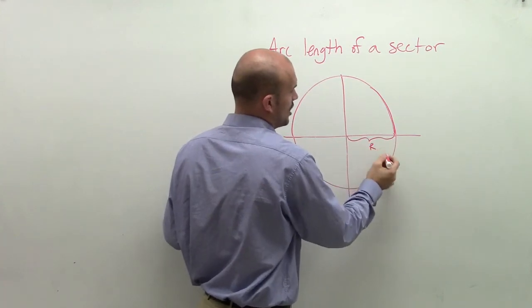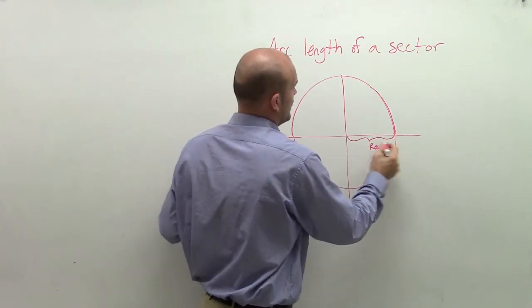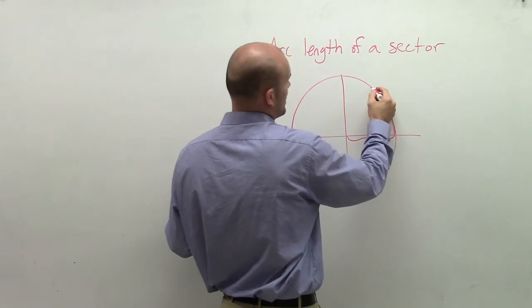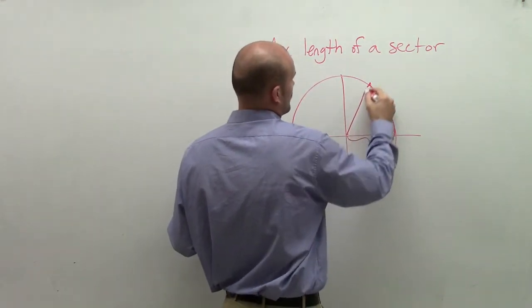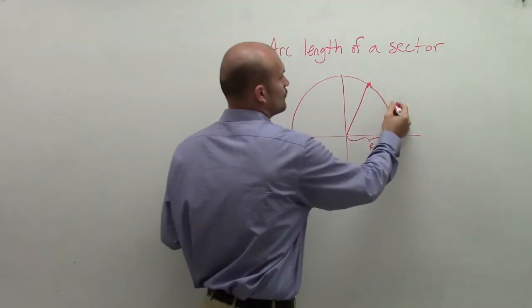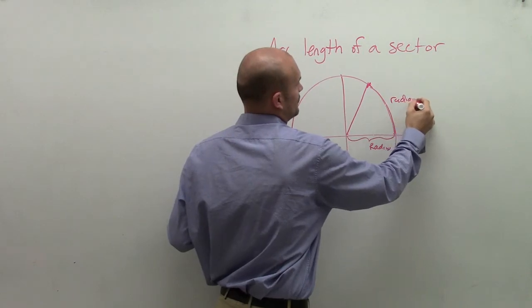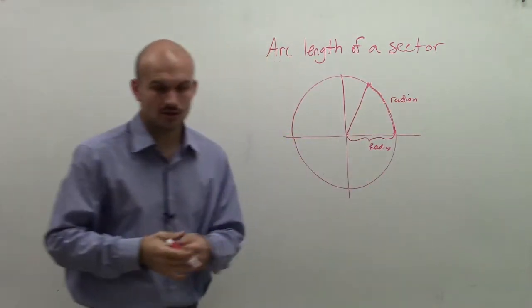Let's just do r as radius. And what we did was if we wrapped that around our circle, what we created was a radian. A radian was the distance of your radius wrapped around your circle.